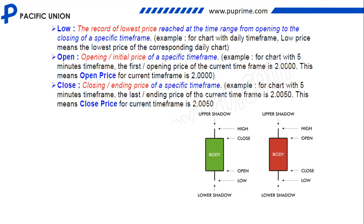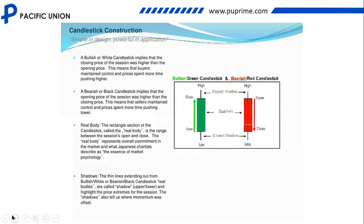The open price is the opening or initial price of a specific time frame. For example, for a chart with a five-minute time frame, if the first open price of the current time frame is 2.000, then the open price for that current time frame is 2.000. The opening price is the first price at which the candlestick will portray in that particular time frame. The closing price is the last price — the ending price. For example, if a candlestick opens at 2.0000 and after five minutes it closes at 2.0050, then the closing price is 2.0050. You can now identify the type of candlestick — whether it is a bullish or bearish candle.